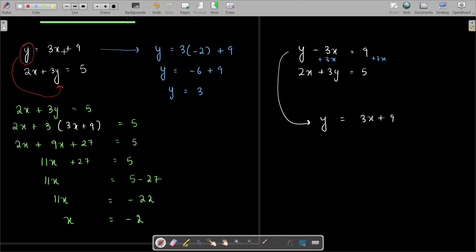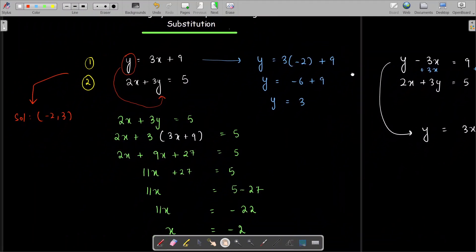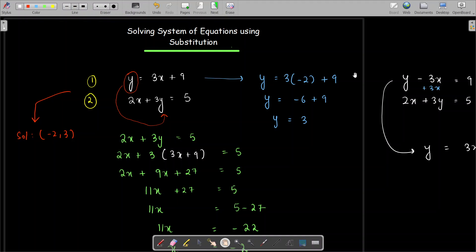But in this case, when any variable is not alone on either side, then we use a different method called elimination. We'll see that in the next video.